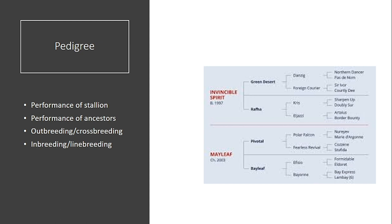The starting point for any search for a stallion is really looking at the pedigree. Ideally, you need to have at least a three-generation pedigree. The stallion will always be listed on the top line and the mare on the bottom line. There may or may not be some basic information for each horse within the pedigree, such as year of birth, colour, etc. We're going to look at the performance of the stallion, the performance of the ancestors, and then talk a little about outbreeding or crossbreeding versus inbreeding or line breeding.